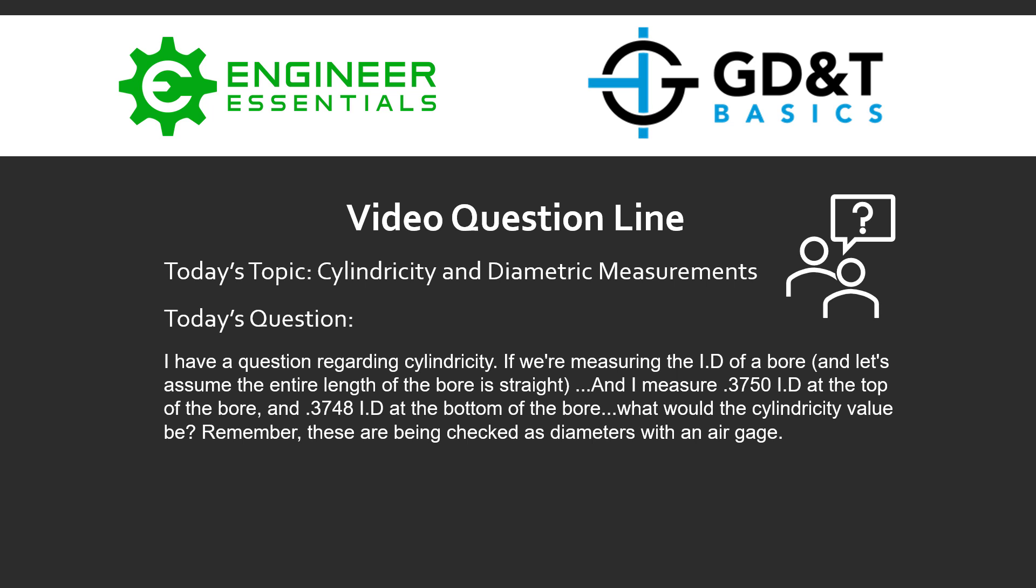So the question submitted was, I have a question regarding cylindricity. If we're measuring the ID of a bore, and let's assume the entire length of that bore is straight, and then I measure a 0.3750 inner diameter at the top of the bore, and a 0.3748 inner diameter at the bottom of the bore, what would the cylindricity value be? Remember these are being checked as diameters with an air gauge, or in other words, a really accurate tool to measure diameters.